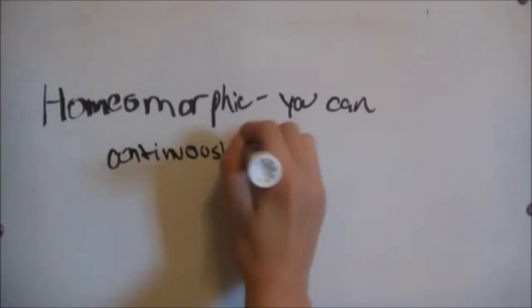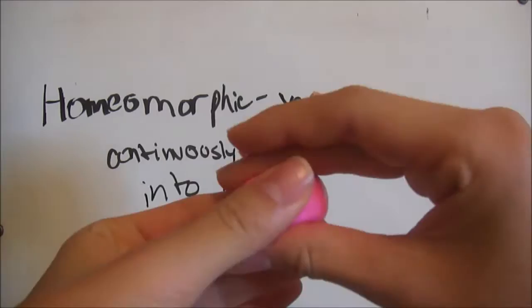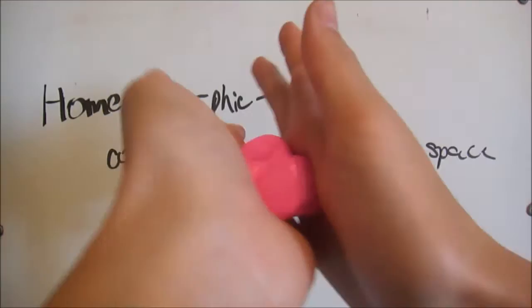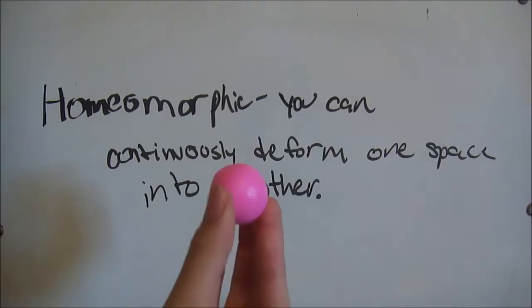Homeomorphic means that if one space is homeomorphic to another, you can continuously deform the space into the other. The 2-sphere and a football are homeomorphic. The 2-sphere and a donut are not. No matter how much you deform a sphere, you can't get that hole in the donut, because the hole was never there in the sphere in the first place.